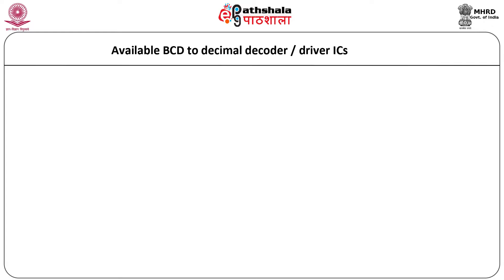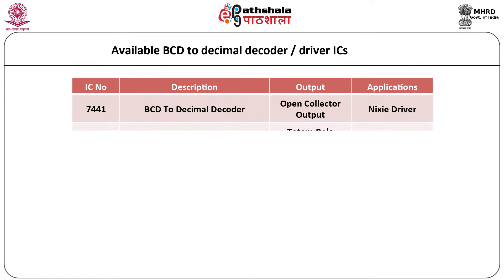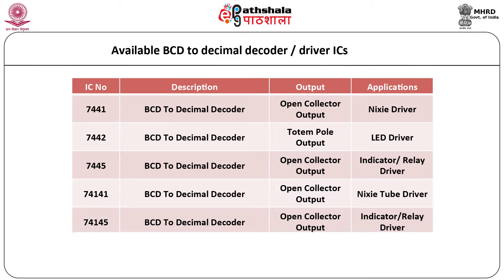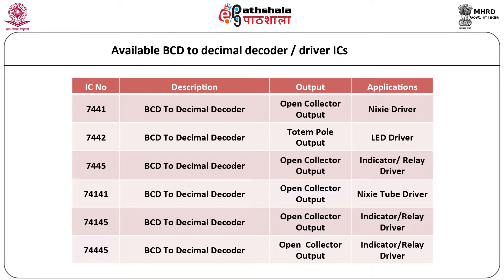A list of available BCD to decimal decoder driver ICs in the TTL logic family is shown here. All these decoder driver ICs have active high inputs and active low outputs. The outputs could be either totem pole or open collector form. These ICs can be used either as a simple indicator or as a driver for a nixie tube, LED, or even a relay.